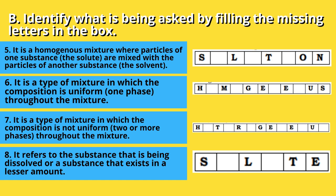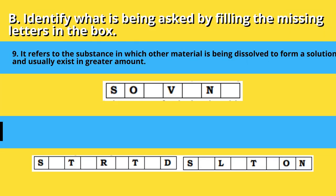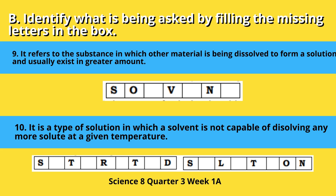6. It is a type of mixture in which the composition is uniform or one phase throughout the mixture. 7. It is a type of mixture in which the composition is not uniform, two or more phases, throughout the mixture. 8. It refers to the substance that is being dissolved or a substance that exists in a lesser amount. 9. It refers to the substance in which other material is being dissolved to form a solution and usually exists in greater amount. 10. It is a type of solution in which a solvent is not capable of dissolving any more solute at a given temperature.